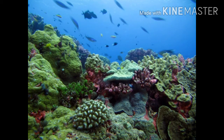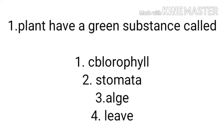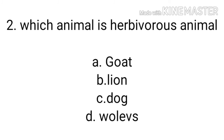This is the first part of the video. Now let's get ready for a test on what you have learned in this lecture. Plants have a green substance called — the right answer is chlorophyll. Which animal is a herbivorous animal? The right answer is goat.